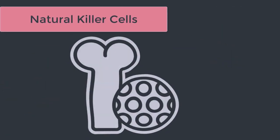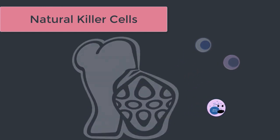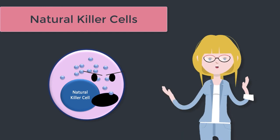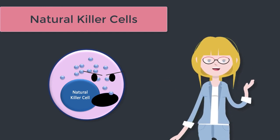Technically, natural killer cells or NK cells are lymphocytes. They have lymphoid origin and are created in the same bone marrow production line as B cells and T cells. But that's where the similarities end. They don't go to Thymus Academy, they don't have CD4 or CD8 markers on their surface, and they don't have perfectly matched antigens for their receptors. And whilst they're not complicated or sophisticated, they are fascinating.